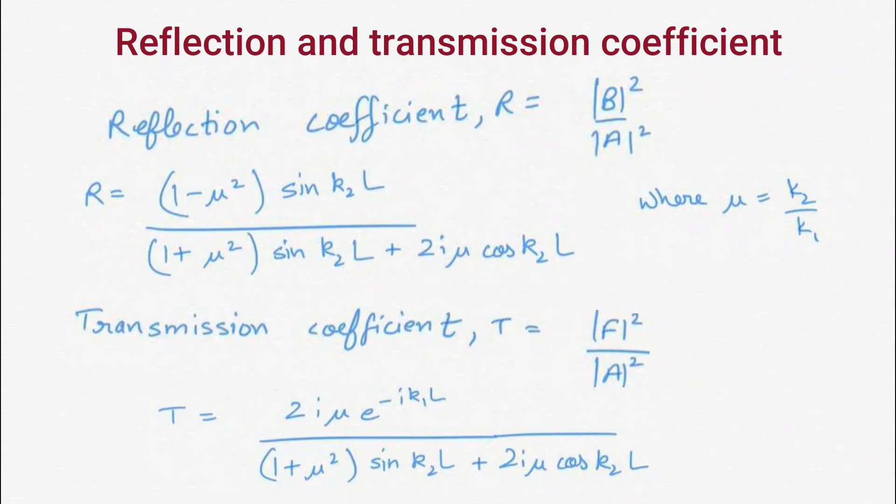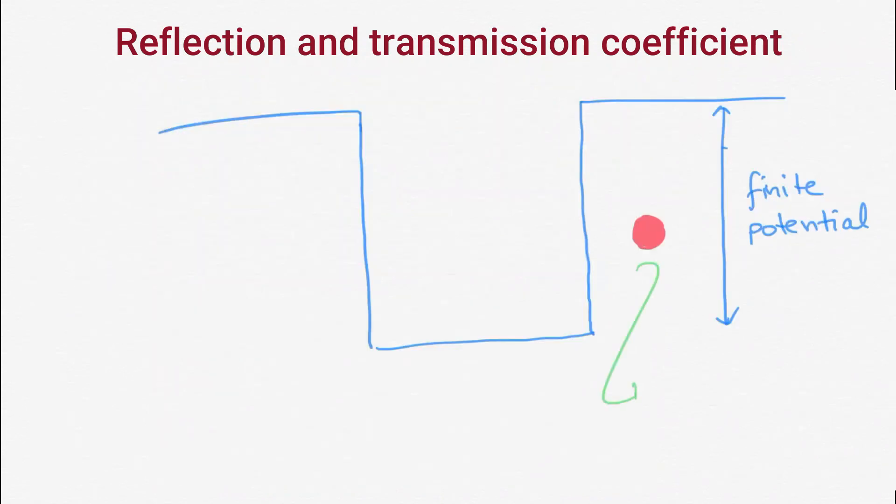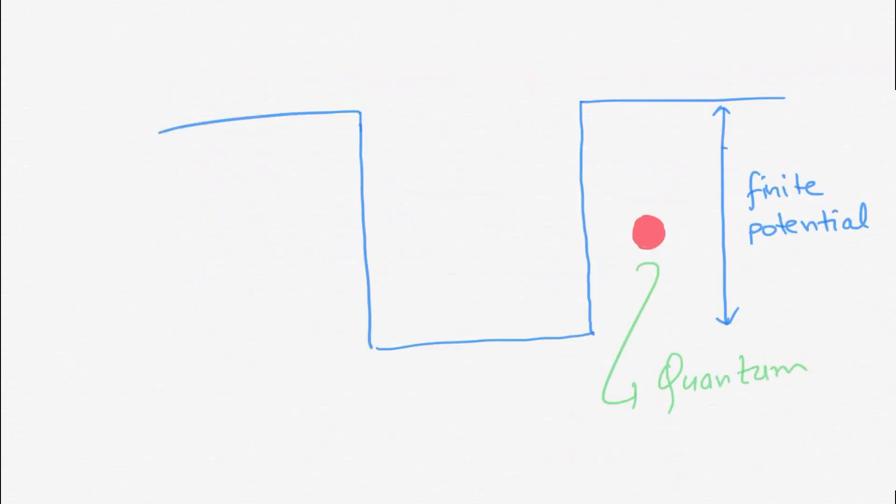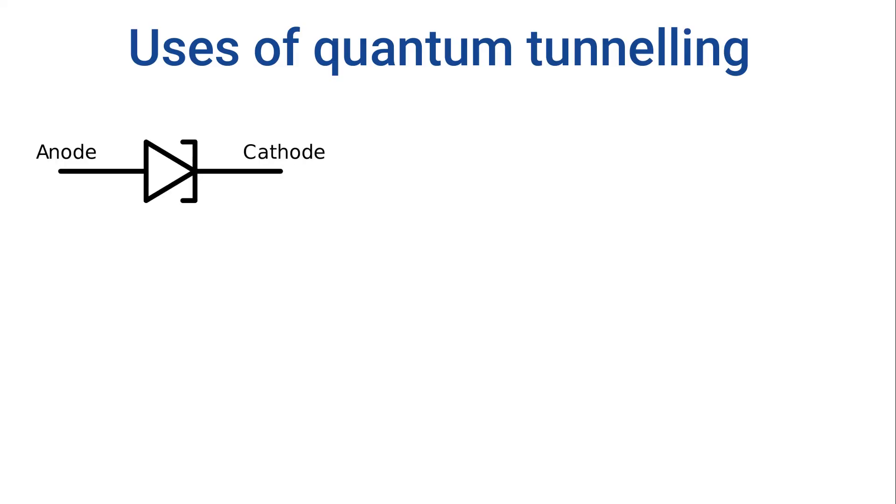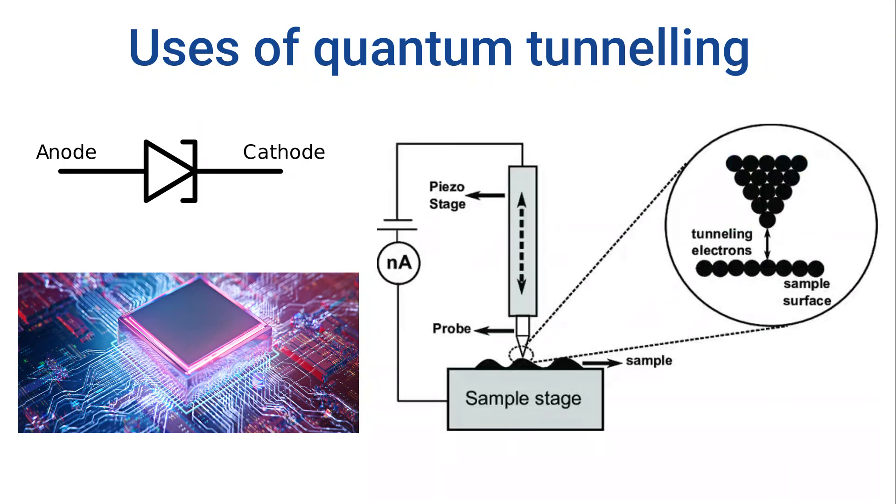Don't worry about this expression for now. This is all mathematical. So now we have understood what is quantum tunneling. Quantum tunneling is used in tunnel diodes, quantum computing, and scanning tunneling microscopes. So that's all for this video. If you have watched this video till here, don't forget to subscribe to the channel. See you guys in the next video.